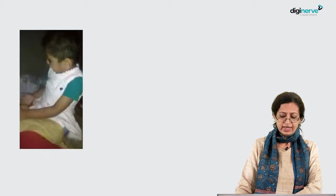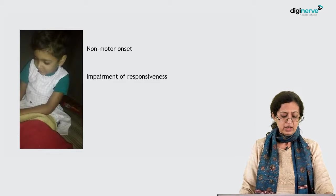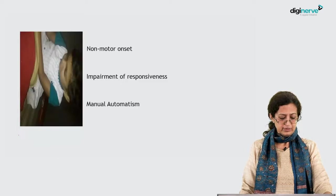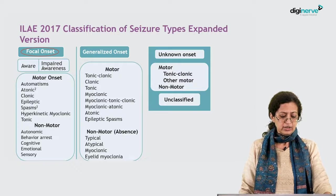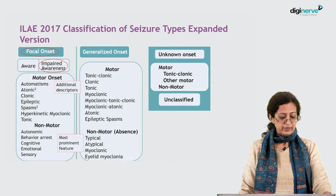Looking at the video of the child, we can see that the episode begins with a vacant stare, an expressionless face, purposeless rubbing of hands, and a gesture as though she's approaching an object. At the end, facial expression returns and she smiles. Her onset is focal with impaired awareness — a non-motor impairment of responsiveness with manual automatisms.